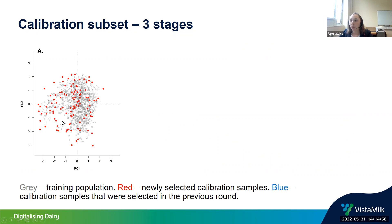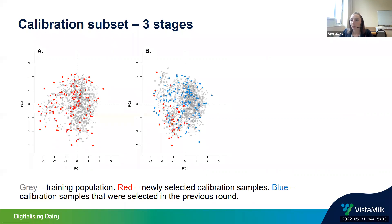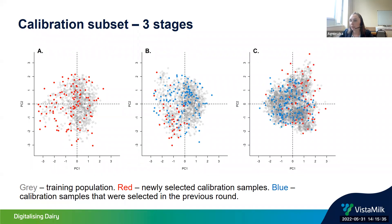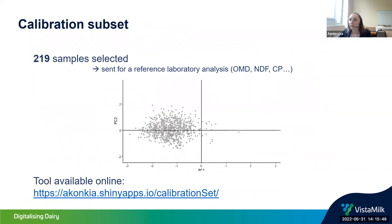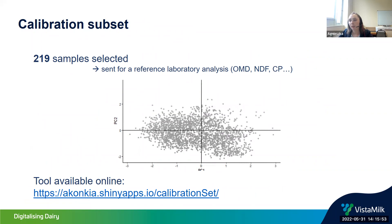We had three stages of calibration development. In the first batch, we had a relatively small number of samples, mostly from the first spring cut. In the second batch, as more samples came through NIR scanning, previously selected samples are shown in blue and newly selected samples in red — as we increased the number of samples and occupied new places in the subspace, we found new representative complementary samples. By the third stage, we had a nicely densely populated subspace, and in total we selected 219 samples sent to the laboratory for reference analysis of OMD, NDF, crude protein, and ash.